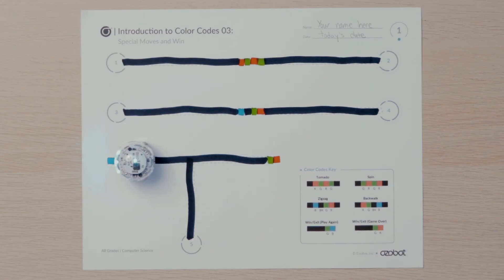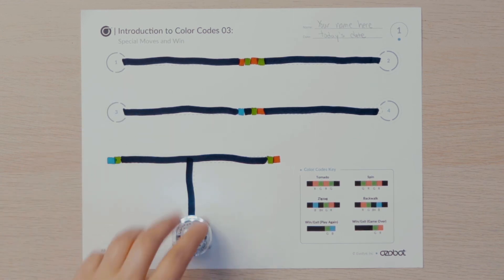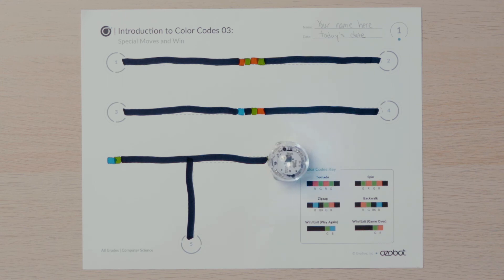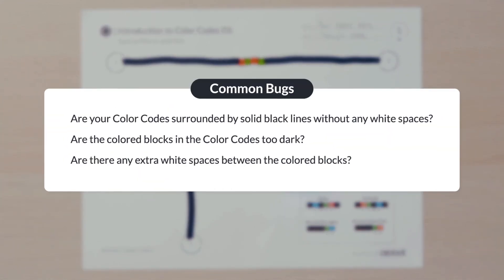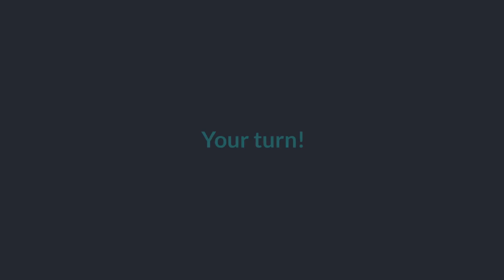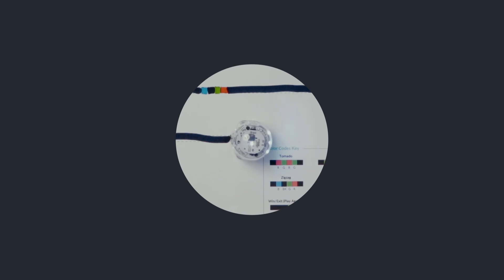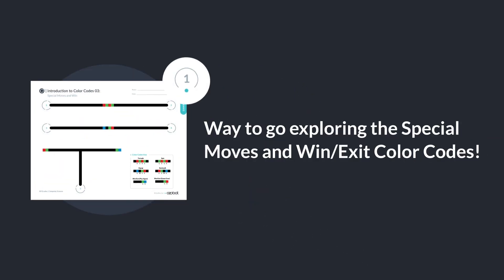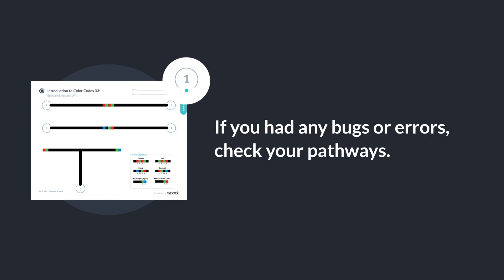When you programmed your bot using the win-exit play again color code, it should have laughed, turned left, turned right, then spun. When you program your bot using the win-exit game over color code, it should have made a sad sound, turned left, turned right, then spun. If any of your color codes did not run correctly, you have a bug or an error. Check your pathways for common bugs with color codes. Are your color codes surrounded by black solid lines without any white spaces? Are the colored blocks in the color codes too dark? Are there any extra white spaces between the colored blocks?